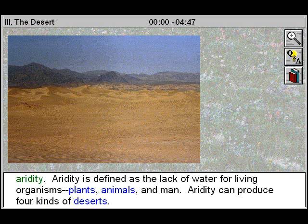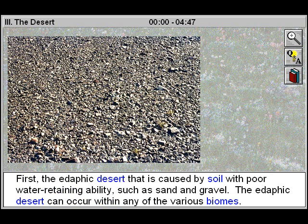Aridity can produce four kinds of deserts. First, the edaphic desert, which is caused by soil with poor water-retaining ability, such as sand and gravel. The edaphic desert can occur within any of the various biomes.